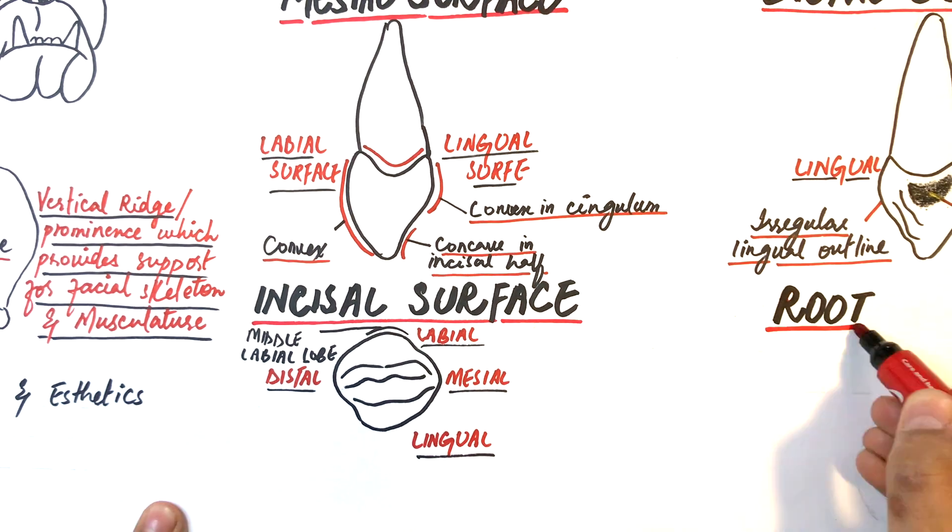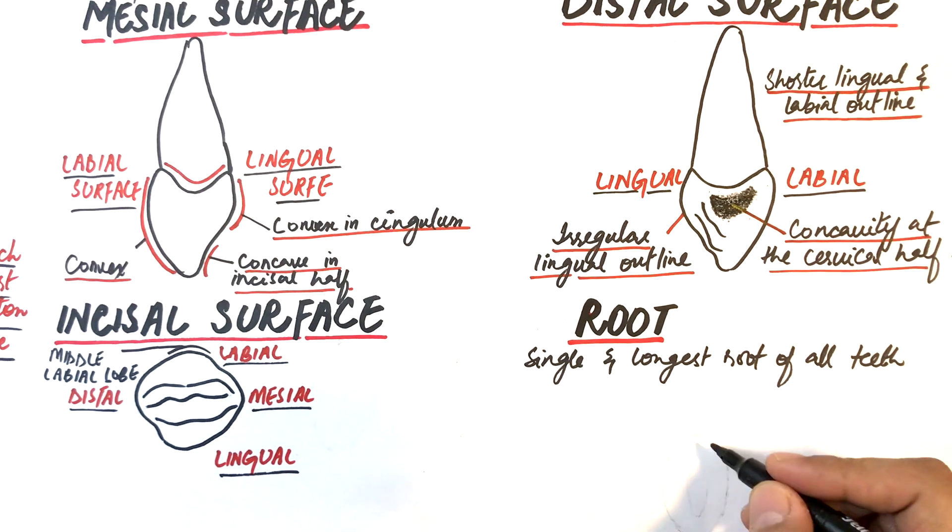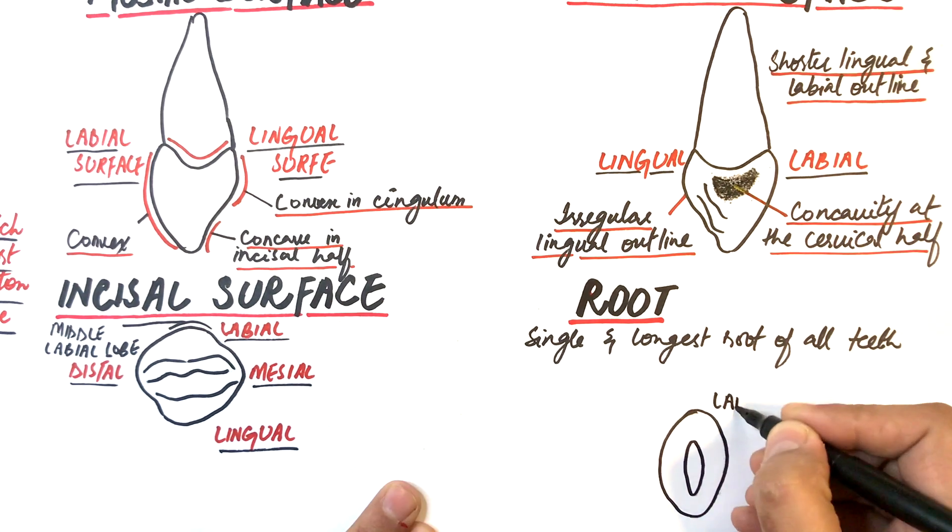The root is single and as mentioned before is the longest root of any tooth in the mouth. The root is wider labiolingually than mesiodistally.